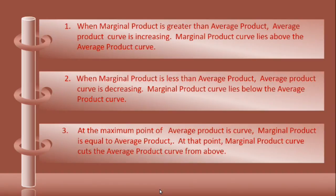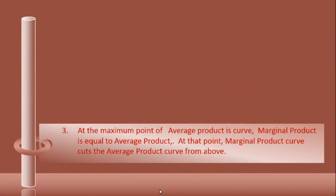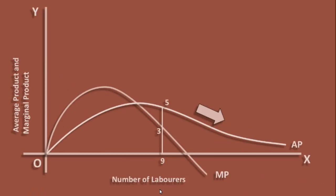We shall now see the third relation. When seven laborers are employed, average product is at its maximum — average product is 6 units and marginal product is also 6 units. Marginal product is equal to average product, and the marginal product curve cuts the average product curve from above.